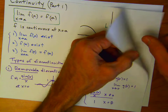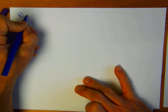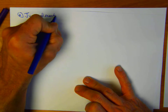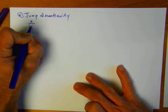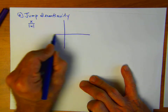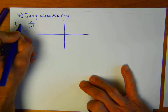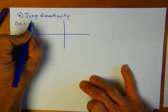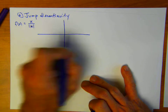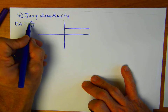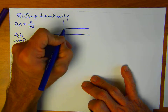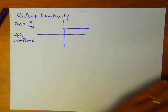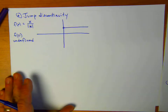The second type is called a jump discontinuity. An example would be x over the absolute value of x. When x is positive, a number divided by its own absolute value is just one, so the function is constant at 1. At zero, f of zero is undefined again because we get zero over zero, so there's a hole right here and we know it's not continuous.